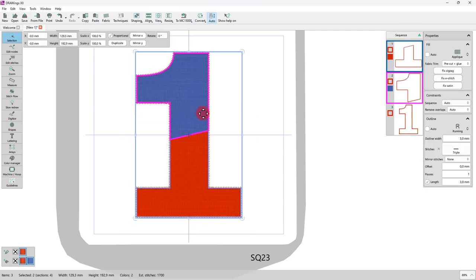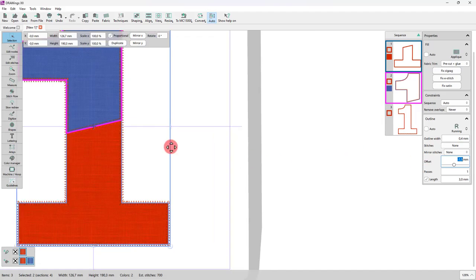Select both applique parts, go to Remove overlaps option on Properties bar and choose Never from the available options. Change the Outline Width into 0.4 mm and set the Stitches Style to None. Finally, set the offset to minus 1.5 mm. This will bring the holding stitches a little to the inside.